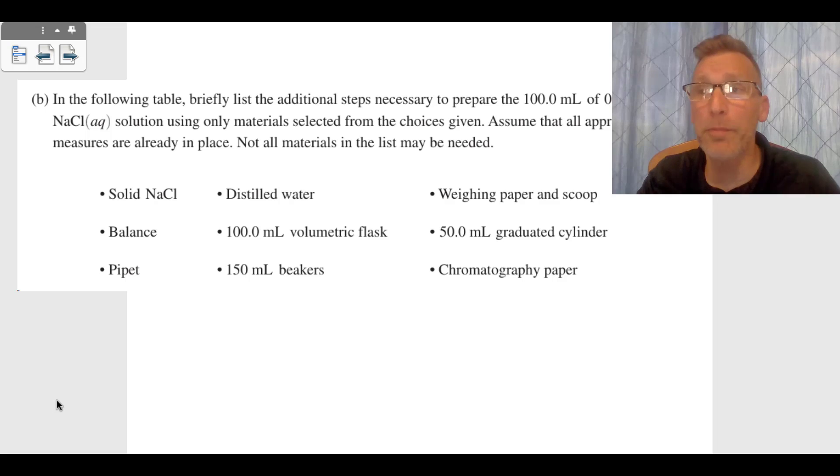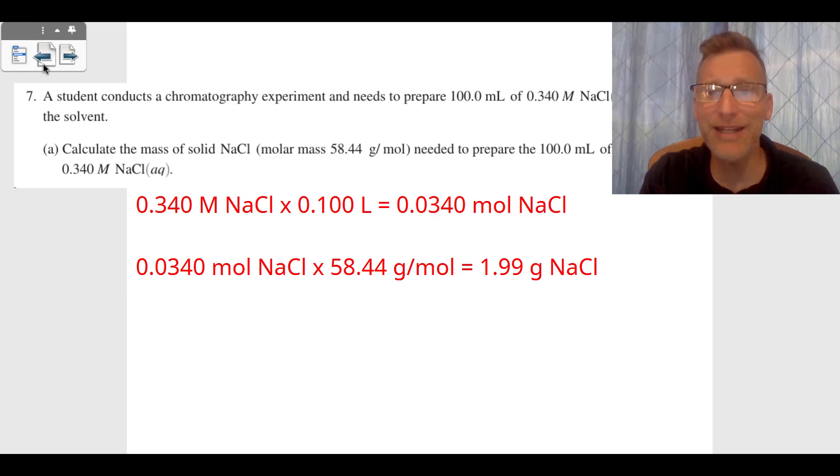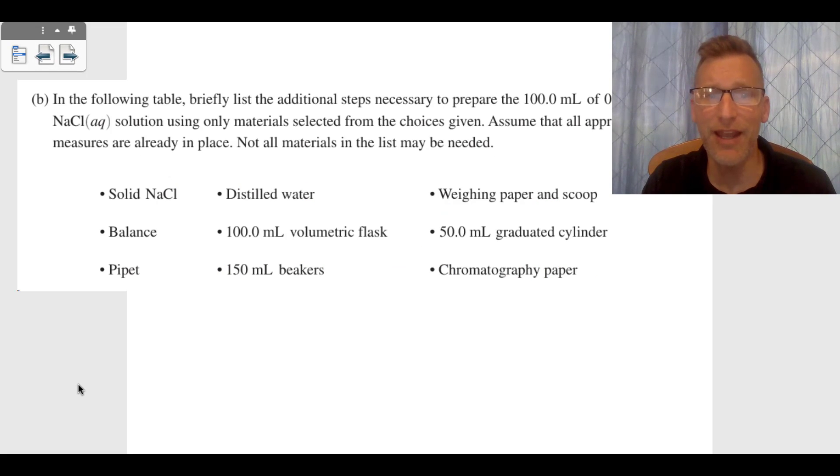Then B says we're going to prepare this solution. Now remember, we had 1.99 grams of NaCl, and we want to prepare this solution. This is what they have given us in the laboratory. So what are we going to do? Obviously, we're going to take that solid NaCl, weigh it out.